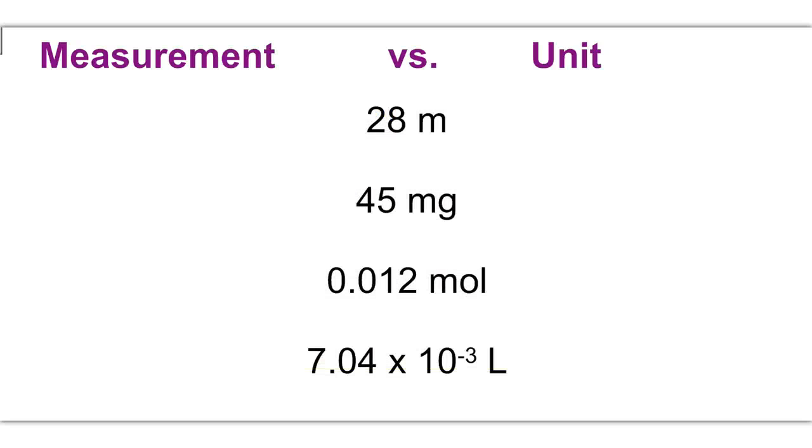So we need to understand what a measurement is and what a unit is. We have several examples here to follow. The first example is 28, and notice the M is going to be our unit. The unit specifically is meters. Meters is a measurement of length. Other units of length may include centimeters, kilometers, or, if you're using the English system, feet, yards, or miles.